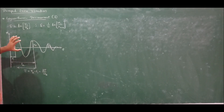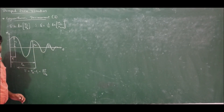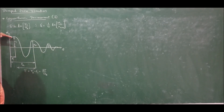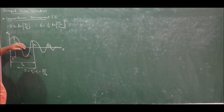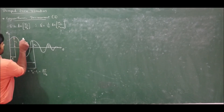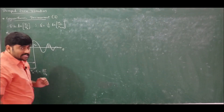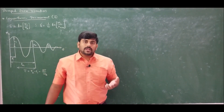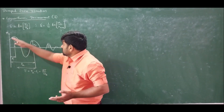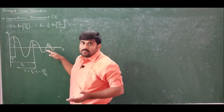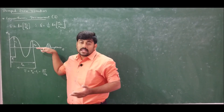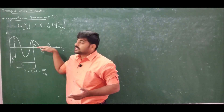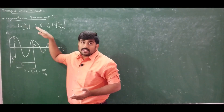To derive an expression for delta in terms of zeta, I consider the underdamped vibrating system response. The amplitudes x1, x2, x3 are decreasing exponentially because the system response equation for an underdamped system is a function of e to the power of minus t. To eliminate the exponential form, we take the natural log — hence the name logarithmic decrement.